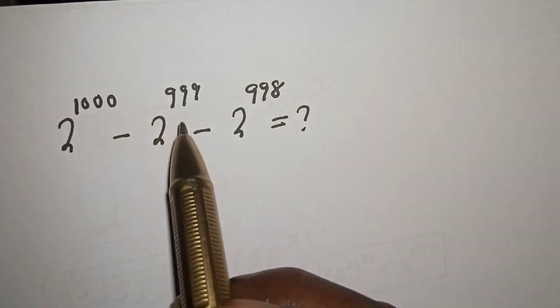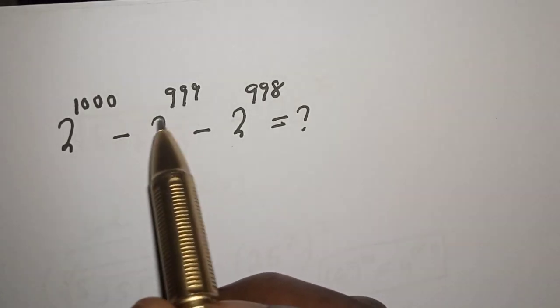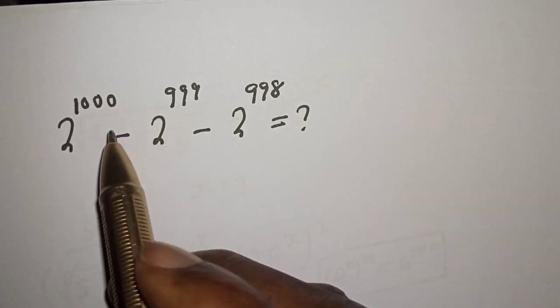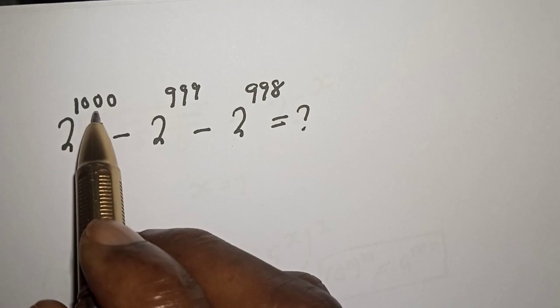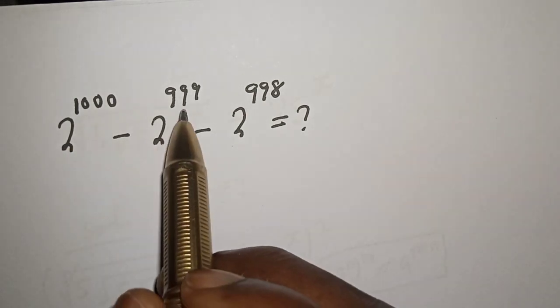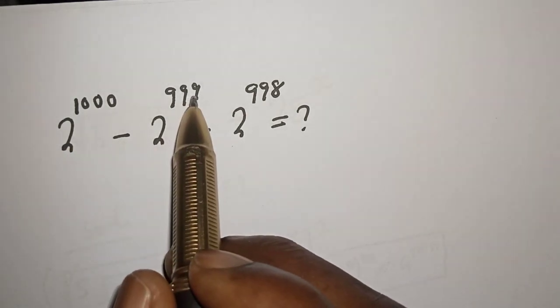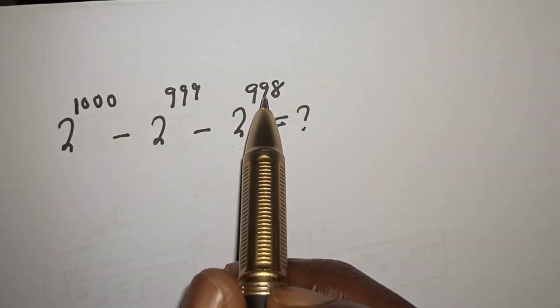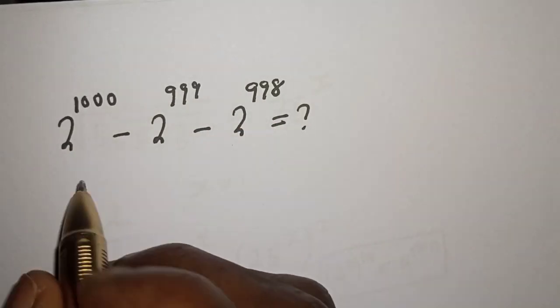Hello, welcome to MathGIS. In this class we quickly want to simplify this nice math problem: 2 raised to power 1000 minus 2 raised to power 999 minus 2 raised to power 998.